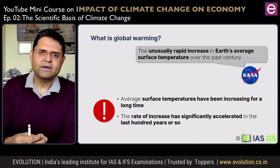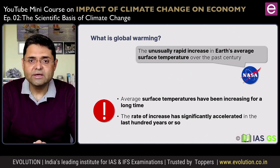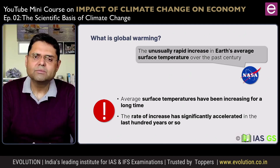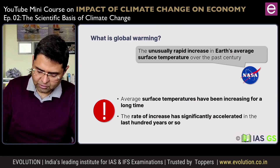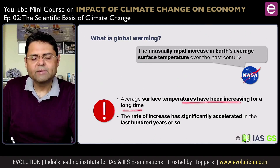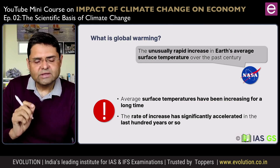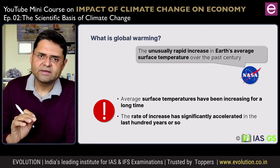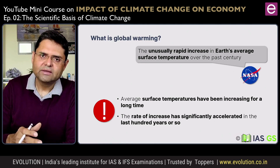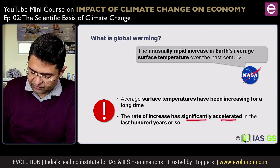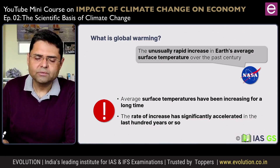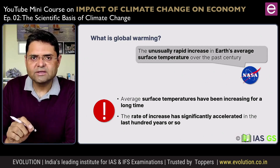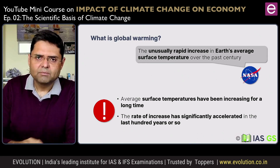NASA's definition says it is an unusually rapid increase in the earth's surface temperature — that is a valid definition. The one I gave you is a little more academic, which you can use in your examination. The surface temperature has been increasing for a long time, and by long time we would take the baseline year as 1750. Scientists look back and say that from 1750 onwards, the earth's temperature has been increasing rather rapidly because of various human activities. The rate of increase has significantly accelerated in the last 100 years because the pace and extent of industrialization and dependence on fossil fuel combustion — for both industry and transportation — has increased much faster in the 20th century.